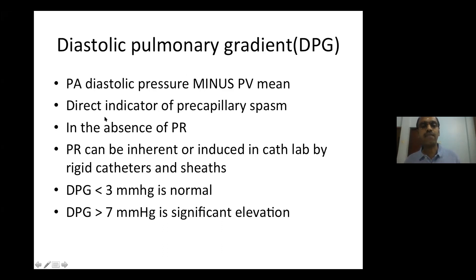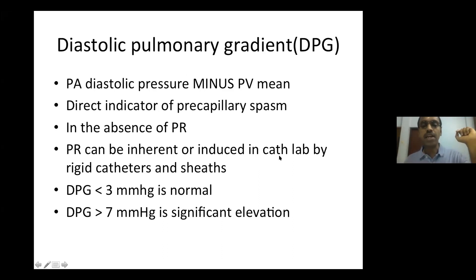However, the caveat is PA diastolic pressures can fall if there is significant PR. PR is inherent or induced in the cath lab by rigid catheters and sheaths. Hence, we need to carefully assess the pulmonary artery diastolic pressure in the cath lab where PR may be caused by the rigid sheaths and rigid catheters that we are using.